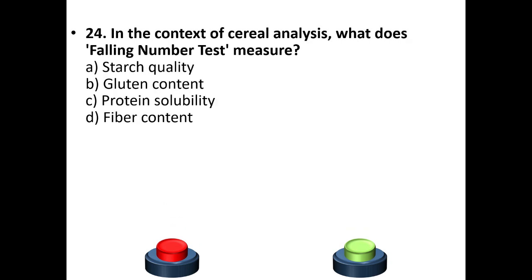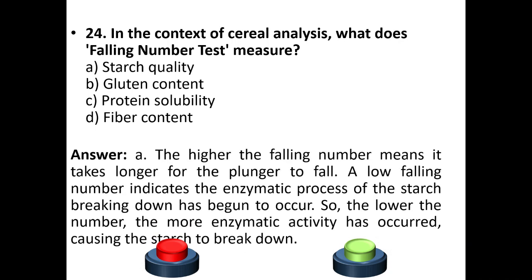Question 24: In the context of cereal analysis, what does the falling number test measure? Options: starch quality, gluten content, protein solubility, fiber content. Your answer is option A: Starch quality. A higher falling number means it takes longer for the plunger to fall. A low falling number indicates that enzymatic breakdown of starch has begun; the lower the number, the more enzymatic activity has occurred causing the starch to break down.